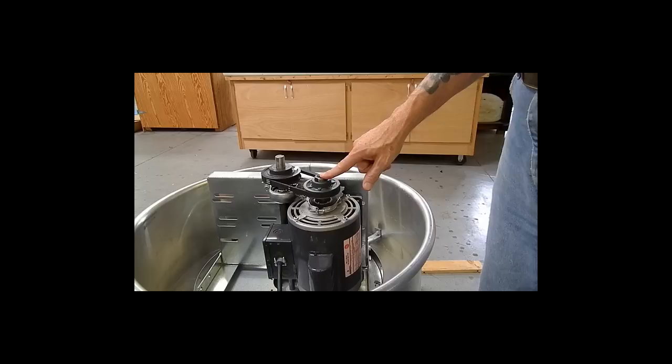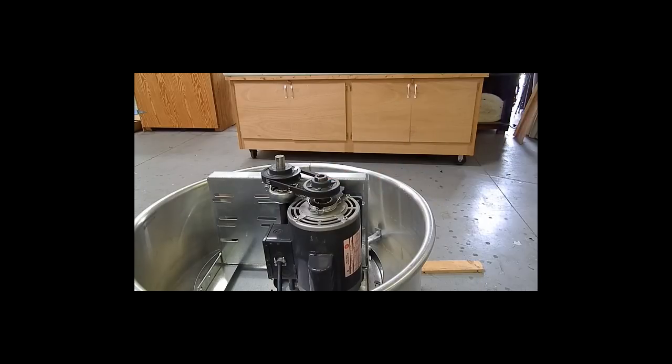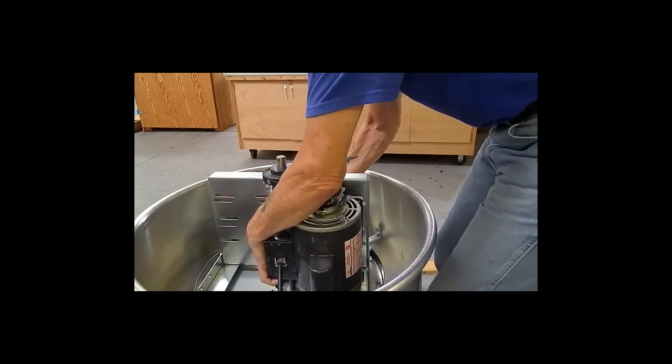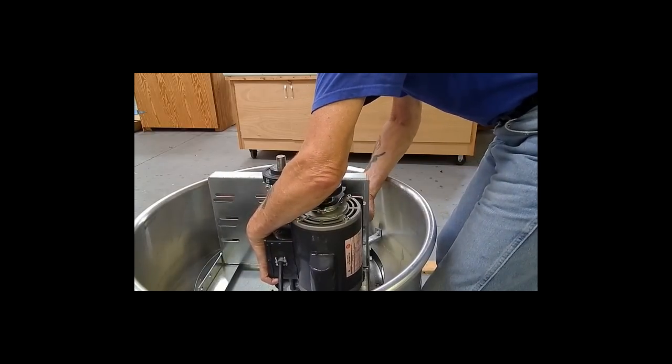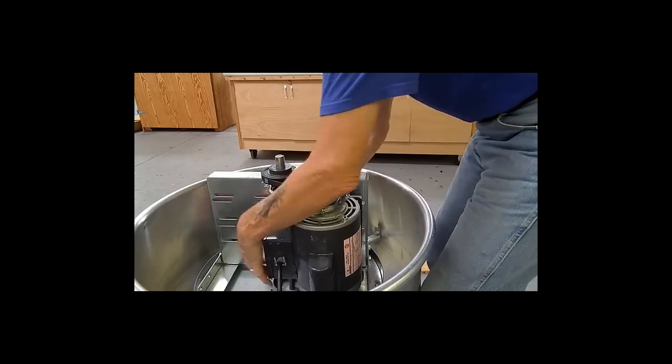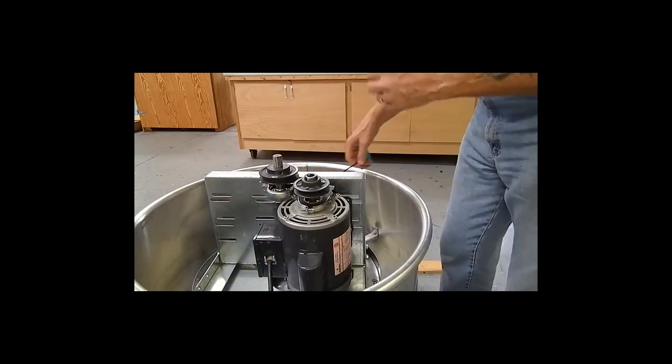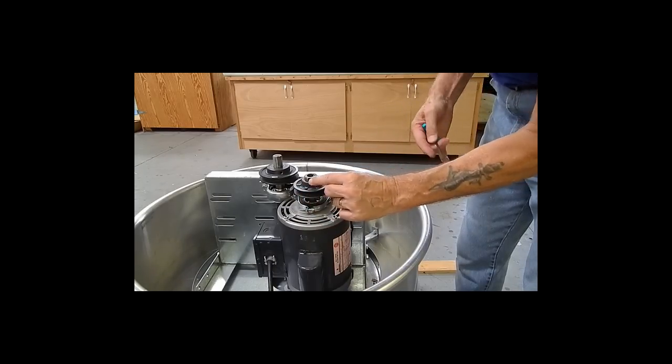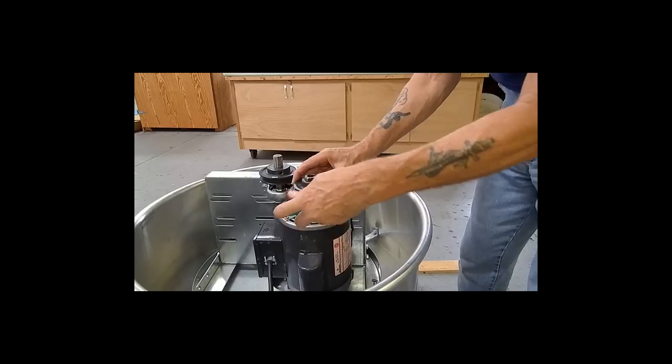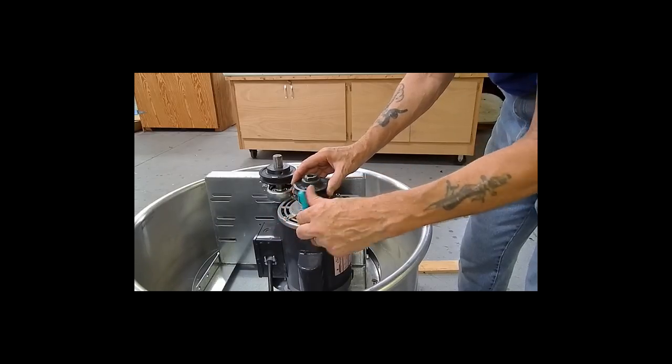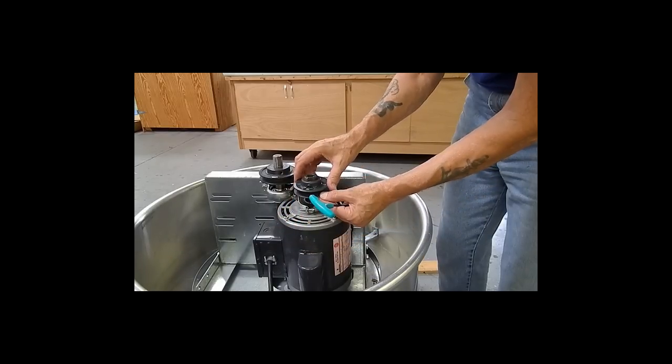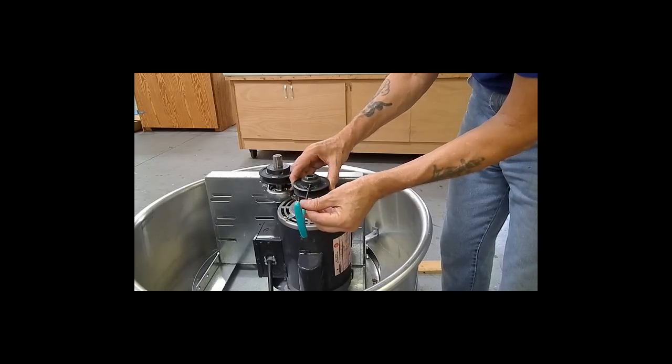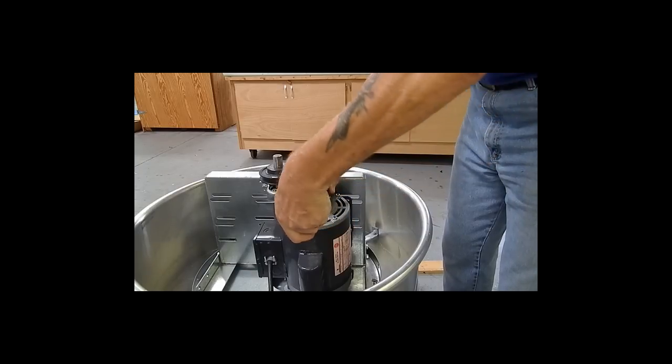We open the motor sheave one full turn. Slacken off the motor mount bolts and remove the fan belt to adjust the motor pulley. Using the Allen key, slacken off the Allen screw and open the sheave one full turn. Adjust half a turn, one full turn, tighten up the Allen screw after which we put the fan belt back on to tighten up the motor, not forgetting to check the level of the belt and the belt tension. Start the fan and check the RPM.